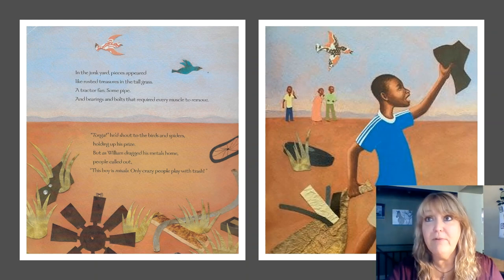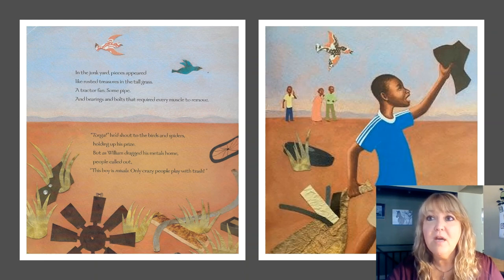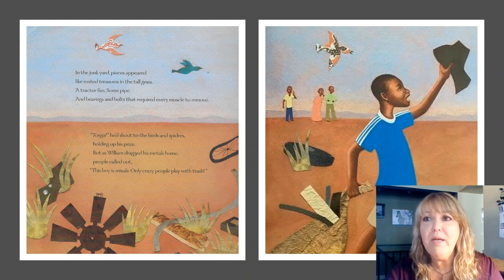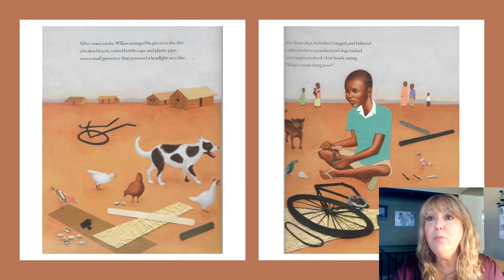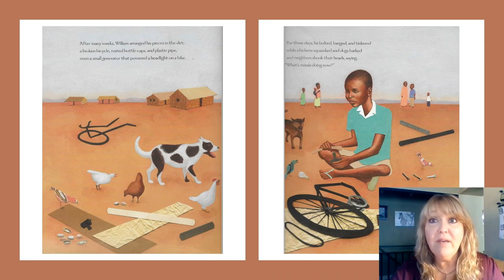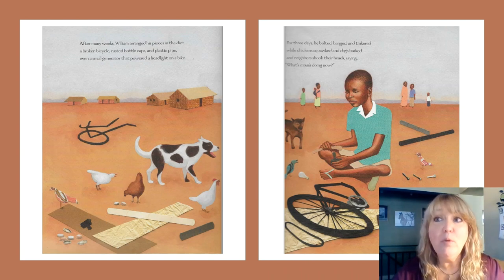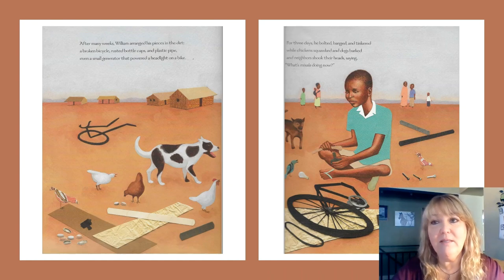In the junkyard, pieces appeared like rusted treasures in the tall grass — a tractor fan, some pipe, and bearings and bolts that required every muscle to remove. Tonga! He'd shout to the birds and spiders, holding up his prize. But as William dragged his medals home, people called out, this boy is masala. Only crazy people play with trash. After many weeks, William arranged his pieces in the dirt — a broken bicycle, rusted bottle caps and plastic pipe, even a small generator that powered a headlight on a bike. For three days he bolted, banged, and tinkered, while chickens squawked and dogs barked and neighbors shook their heads saying, what's Masala doing now?